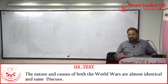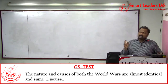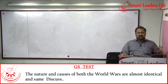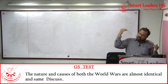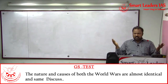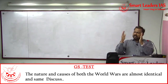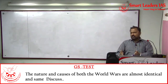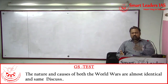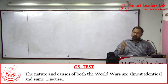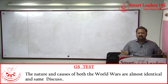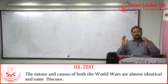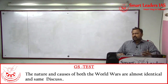The nature and causes of both world wars are almost identical. You can identify the causes of the First World War and the Second World War — they are not different. The same causes led to the First World War, and similar causes led to the Second World War. Begin your introduction by saying that though the First and Second World Wars were separated by a gap of two decades, there are a lot of similarities between their causes and consequences.